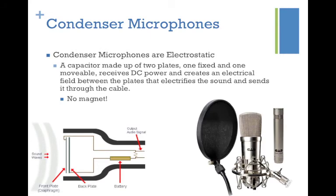Condenser microphones have two types of diaphragms: large and small. A large diaphragm microphone is side-addressed — the front of the microphone is actually on the side. Whereas with a small diaphragm condenser microphone, the front is at the top, just like a dynamic mic or what you might call a speech mic.